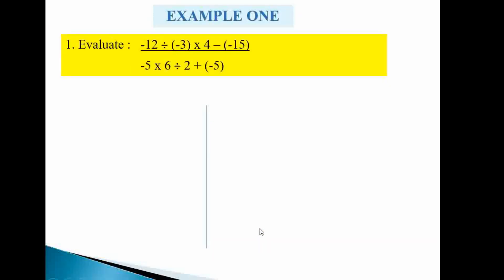Example one involves basic integer operations. The question reads: negative 12 divided by negative 3, multiplied by 4, minus negative 50 — all on the numerator — divided by negative 5 times 6 divided by 2 plus negative 5 on the denominator.